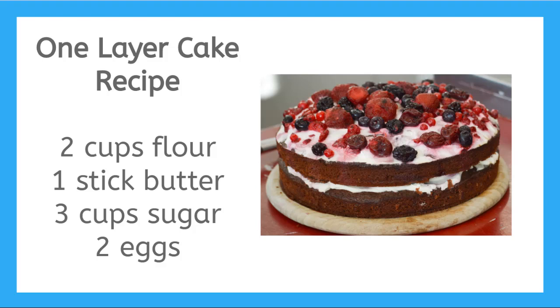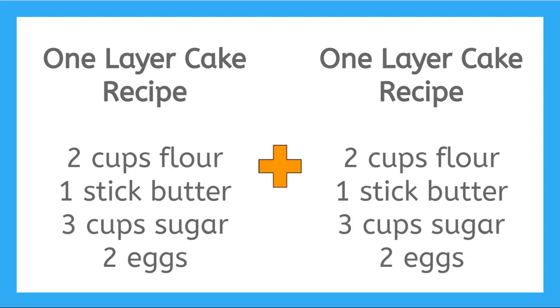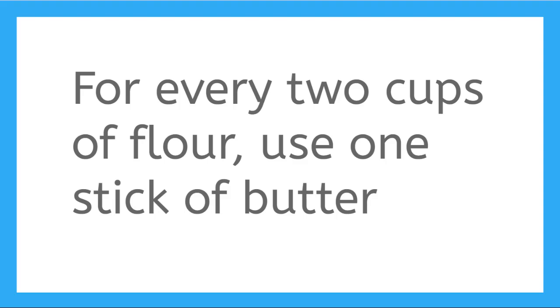Here is the recipe for one layer cake. But Sally needs to double the recipe to make the cake double layer. Since Sally has to double the recipe, she will need to use four cups of flour, not the original two cups from the one layer recipe. But the original recipe says, for every two cups of flour, use one stick of butter. So if she used four cups of flour, she will need to use two sticks of butter.